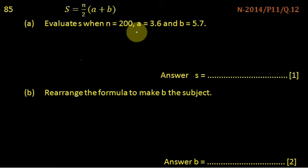Evaluate when n is equal to 200, a is equal to 3.6, and b is equal to 5.7.